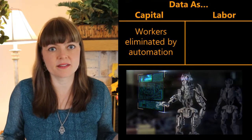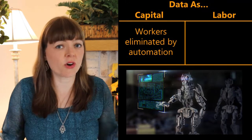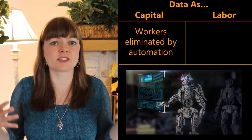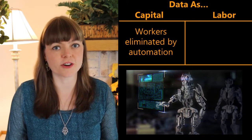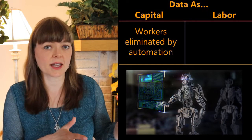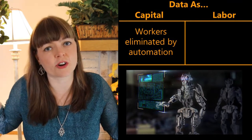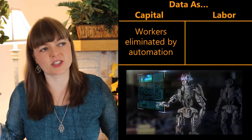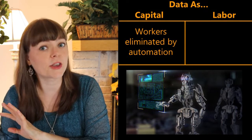In the data as capital model, there's a lot of worry that workers will be eliminated, that we won't need people to be productive anymore, that the only thing people can be is consumers. They can't be sources of value to others. This article actually says that's a universal basic income sort of way of viewing things, that people are no longer of value, so we need to just give them money because they can be consumers but cannot be valuable as producers.